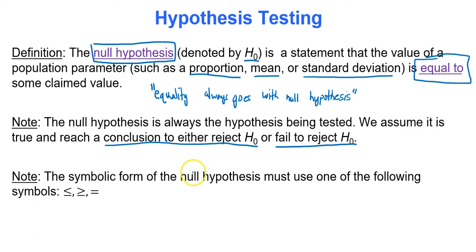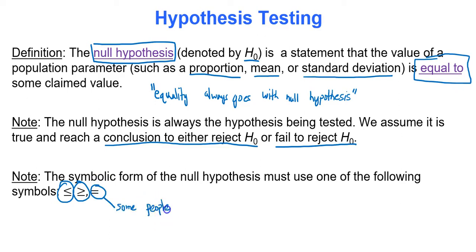The symbolic form of the null hypothesis must use one of the following symbols, since it has to contain equality: less than or equal to, greater than or equal to, or just equal to. It's not uncommon for some instructors to always generically use equal to for the null hypothesis, which isn't wrong.